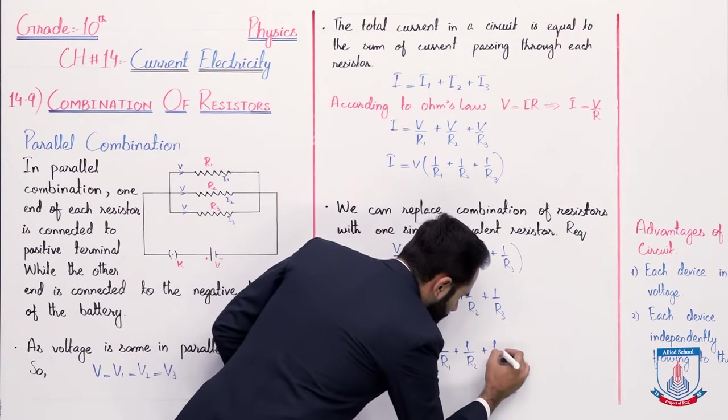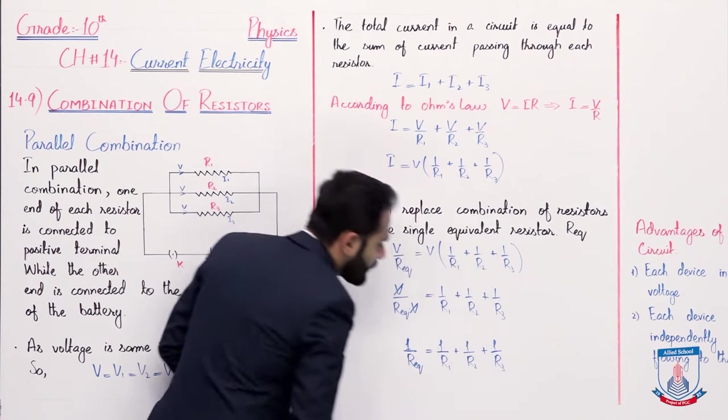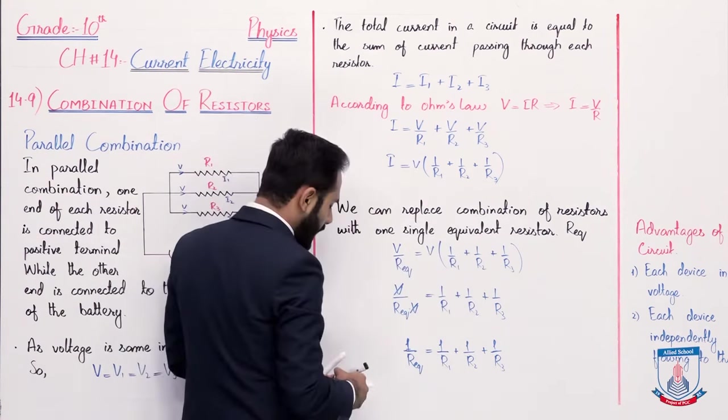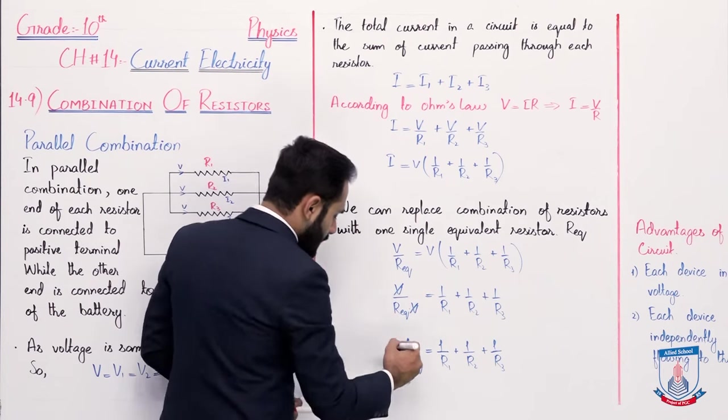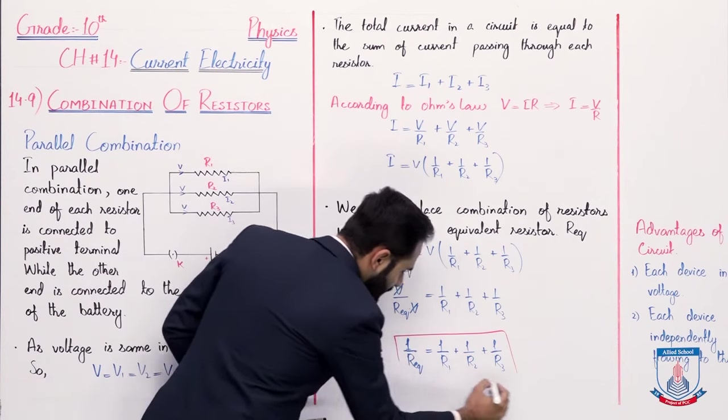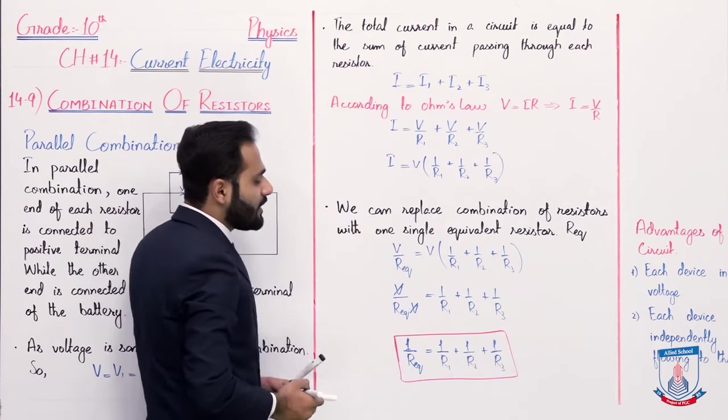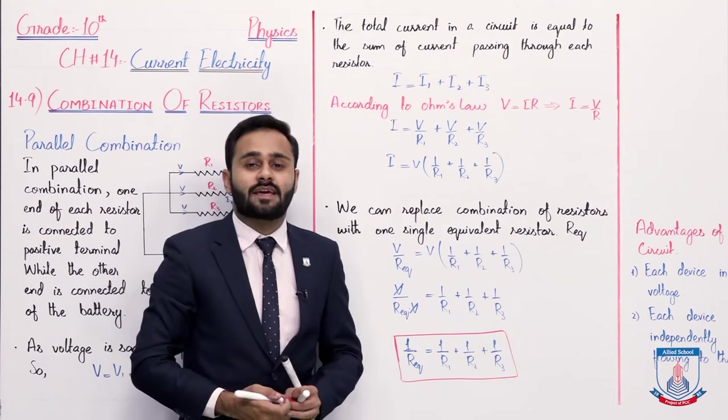Clear? And this is the final equivalent resistance formula. Clear? In this way, we can add these three resistances in parallel combination and we can find out the equivalent resistance. Clear?